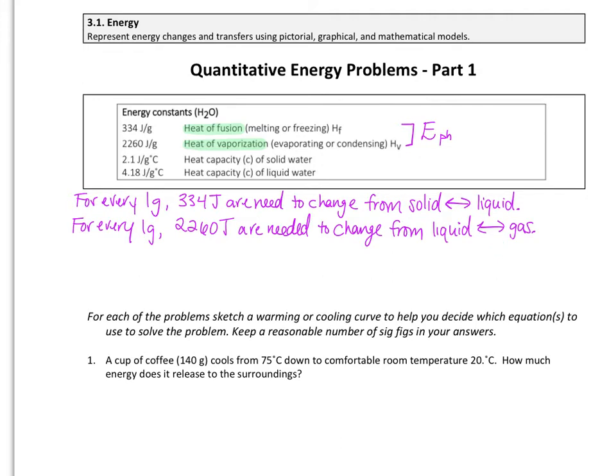We can take these, and we can also write them not just as a forever statement, but we could write them as a ratio. So our ratio would be 334 joules for every one gram, or 2,260 joules for every one gram.